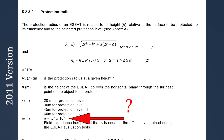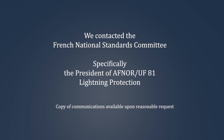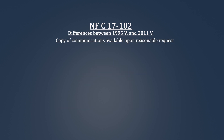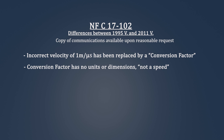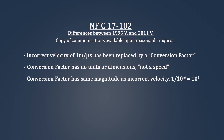To find out more about where this number came from, we contacted the French National Standards Committee — specifically the President of AFNOR UF81 Lightning Protection. According to the President, in the 2011 version of NFC 17-102, the velocity of 1 meter per microsecond as used in the 1995 version has been replaced by a conversion factor. This conversion factor has no units or dimensions, but is identical in magnitude to the previously used incorrect leader velocity and numerically produces the exact same claimed enhanced protection radius.